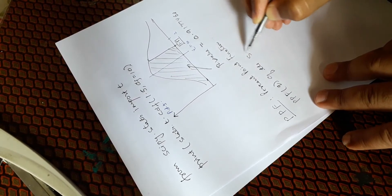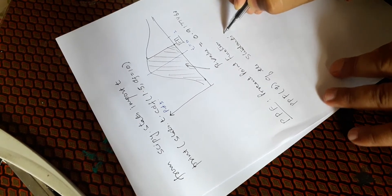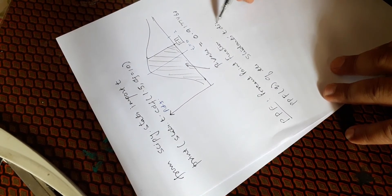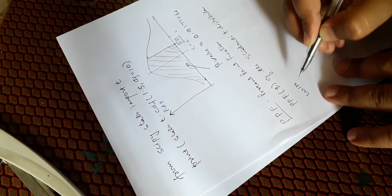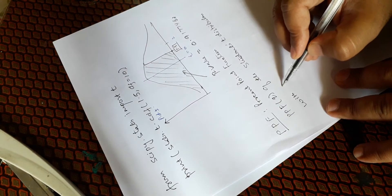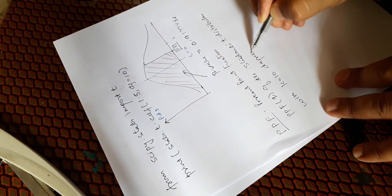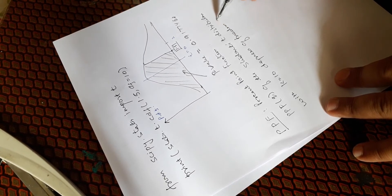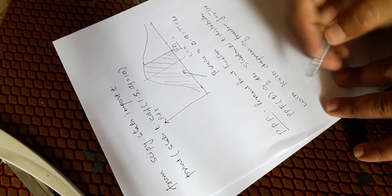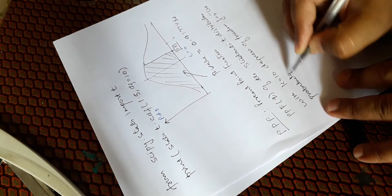Now, suppose I want the right-hand tail value. If I want the right-hand tail value, I will subtract the left-hand tail value from 1 to get the right-hand tail. We have already gone through CDF. Now let us go to the PPF function.